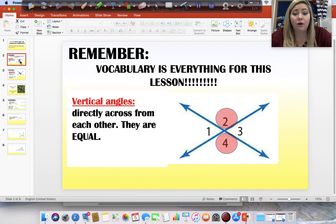So, vertical angles. I'm showing you that these are vertical angles, the two that are highlighted. They are directly across from each other and they are equal. So, vertical angles directly across from each other and they are equal.